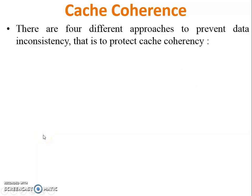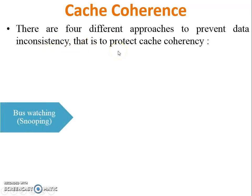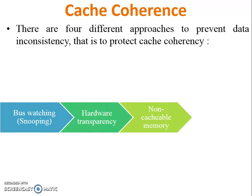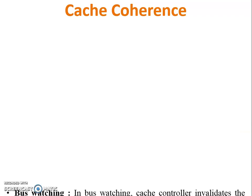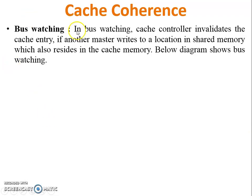There are four different approaches to prevent data inconsistency, or the cache coherence problem. First is bus watching, also called snooping. Second is hardware transparency. Third is non-cacheable memory. Fourth is cache flushing. Let's see each one.